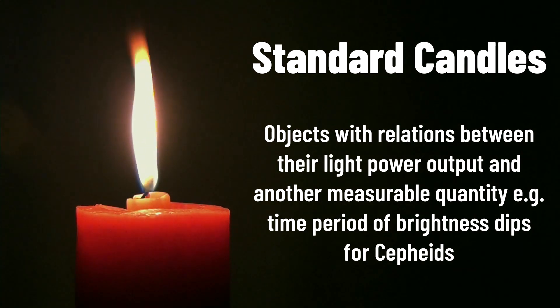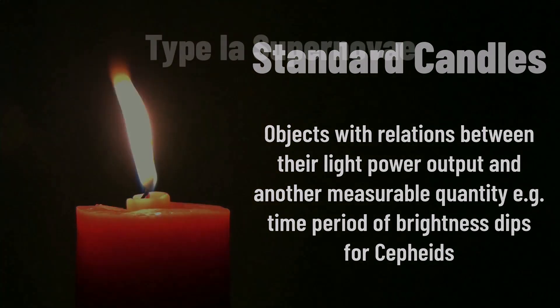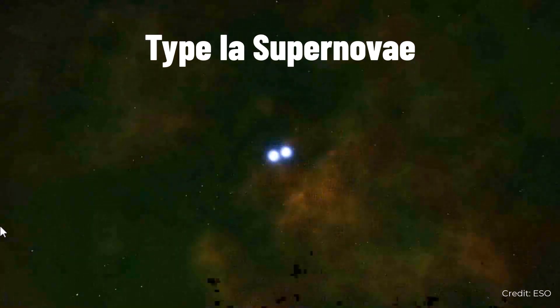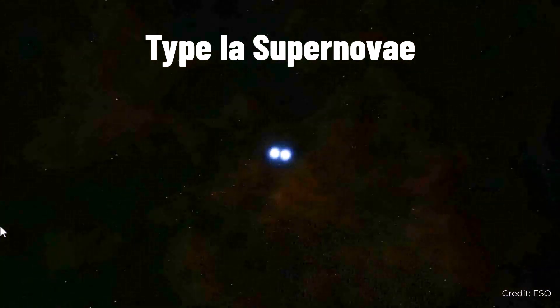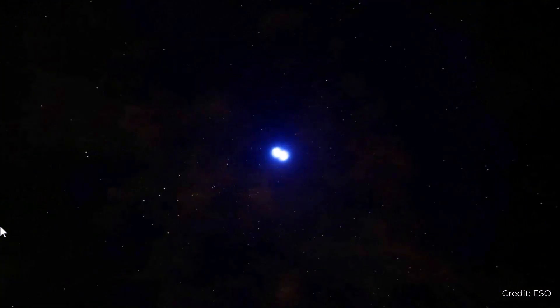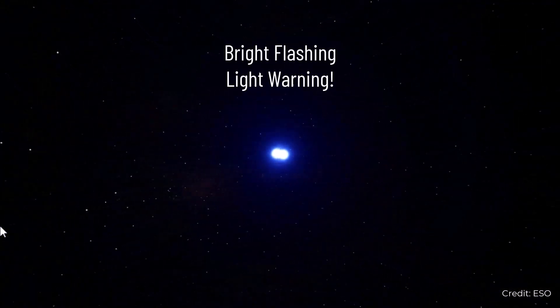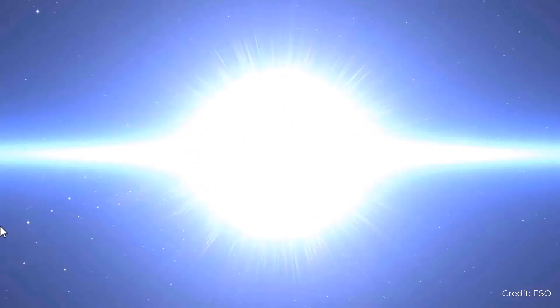The next type of standard candles worth considering are Type 1a supernovae. These are results of a set of two orbiting stars known as a binary, with one of the stars being a white dwarf accreting mass from the other and then exploding and releasing energy as it collapses from too much gravity. The peak brightness of such explosions is thought to be constant.